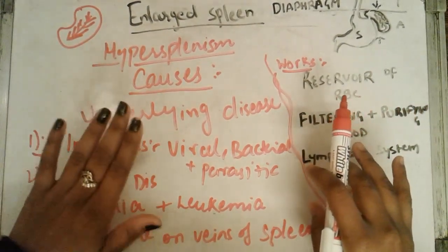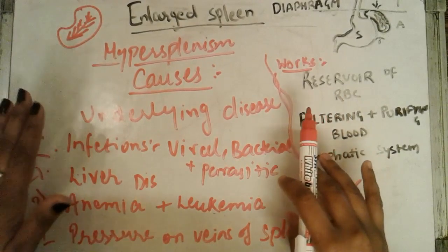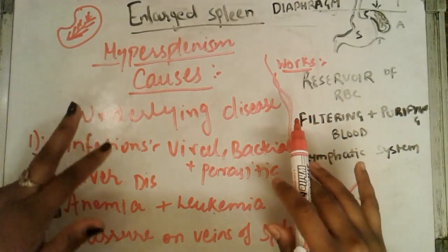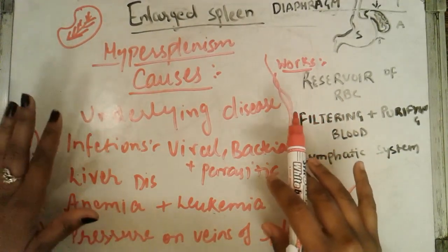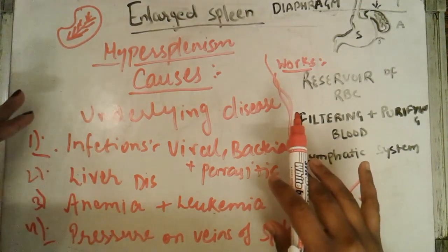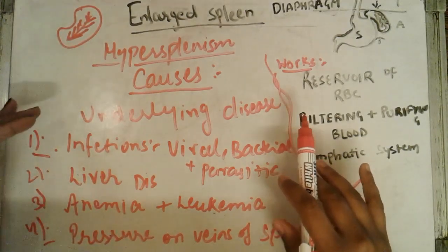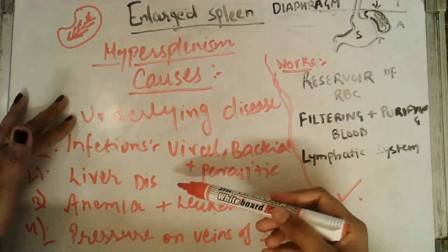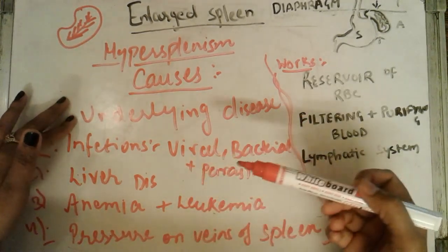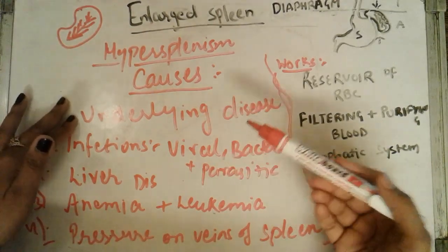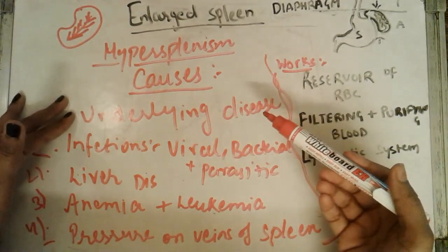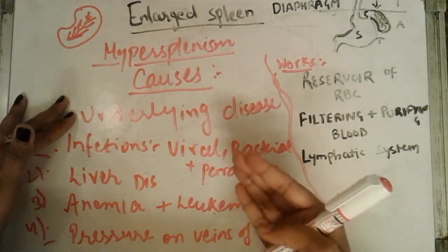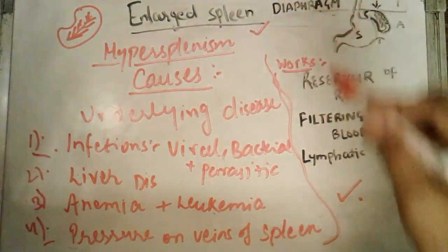There are no medications that can treat the enlarged spleen directly on its own — it needs treatment of the underlying cause. Before going to the treatment part, you must identify if there is any underlying disease such as infection, liver disease, cirrhosis, anemia, or pressure on the veins of the spleen, and treat that disease first. Then the enlarged spleen will resolve by itself.